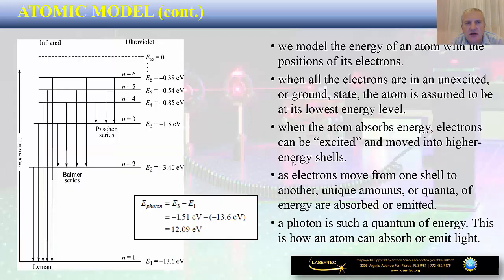Different energy levels characterize different orbits in a specific atomic model. When electrons are in an unexcited or ground state, the atom is at its lowest energy level. If an atom absorbs external energy, the electrons may be excited and move into higher energy shells. As electrons move from one shell to another, unique quanta of energy are absorbed or emitted, where that quantum of energy comes in the form of a photon.